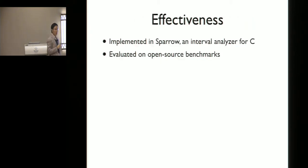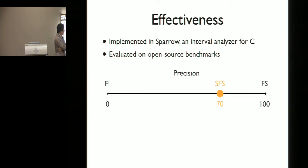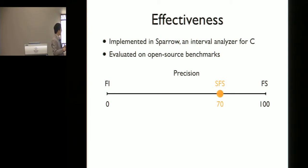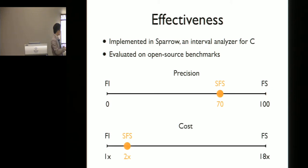We implemented this approach in SPARO, an interval domain-based static analyzer for C, and evaluated its effectiveness with open source programs. The results showed our approach produces a strategy with a good balance between precision and cost. Normalizing flow-sensitive analysis to 100 and flow-insensitive to 0, our selective flow-sensitive analysis achieves a precision around 70 — meaning we can prove 70% of the assertions that require flow-sensitivity — while increasing analysis time of the flow-insensitive analysis by only two times.